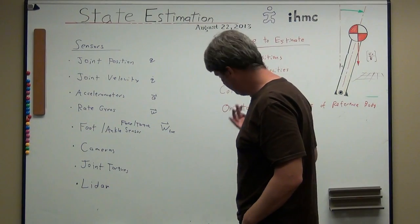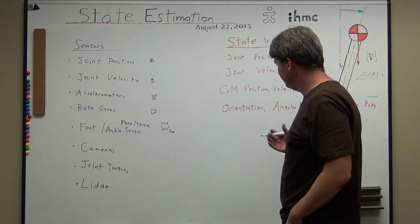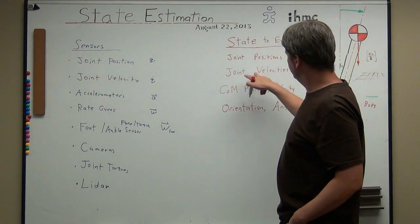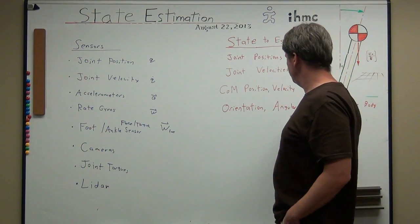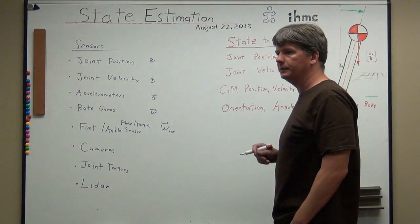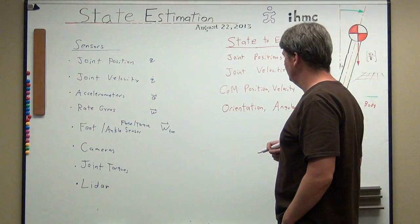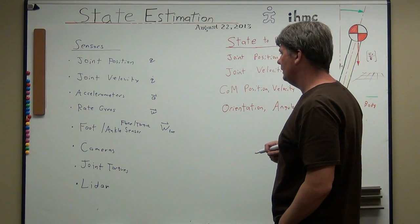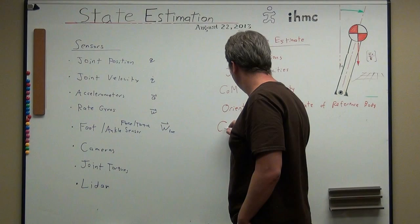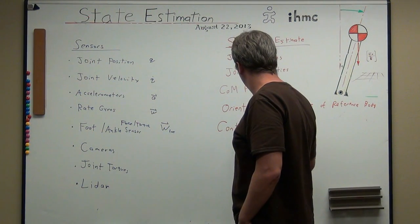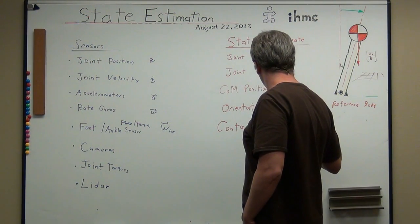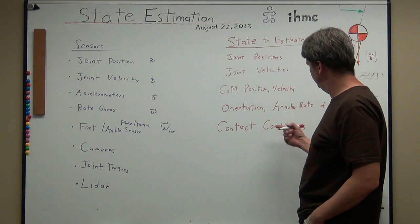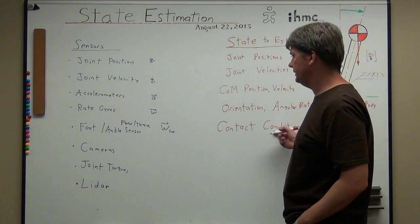Like the chest or the pelvis — or you could even have it be the left foot. If you have the orientation and the angular rate of some reference body, and you have the joint positions and velocities, then you can also figure out the orientation and angular rate of any of the other bodies. Contact conditions — what points are contacting, where they're contacting, maybe the forces, things like that.